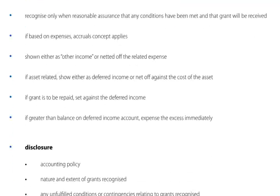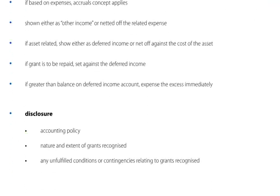If the grant potentially has to be repaid, then we need to set it first of all against the deferred income which has not yet been credited to the income statement. But if the amount to be repaid is greater than the balance on the deferred income account, then the excess needs to be expensed this year in the statement of income.